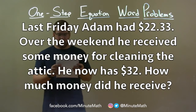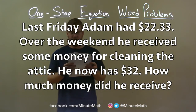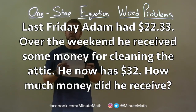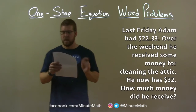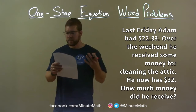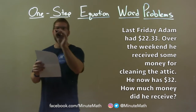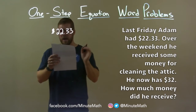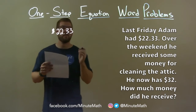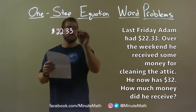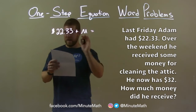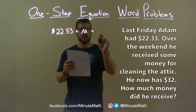Last Friday, Adam had $22.33. Over the weekend, he received some money for cleaning the attic. He now has $32. How much money did he receive? We create an equation: $22.33 plus the money M he made over the weekend equals $32.